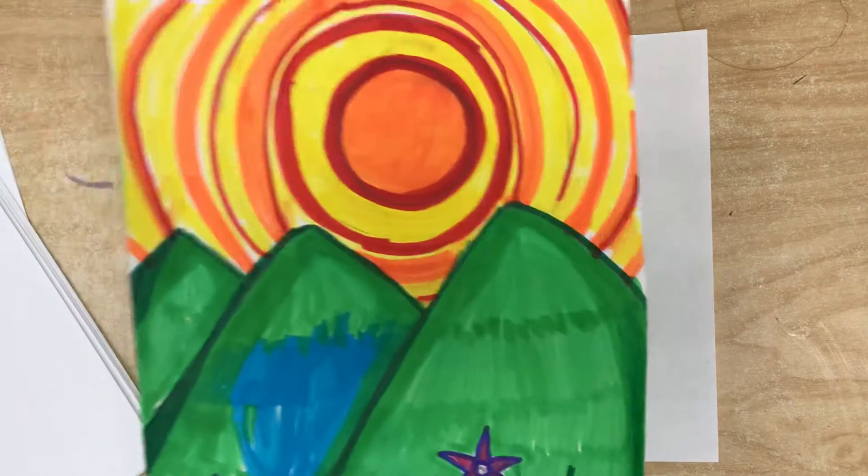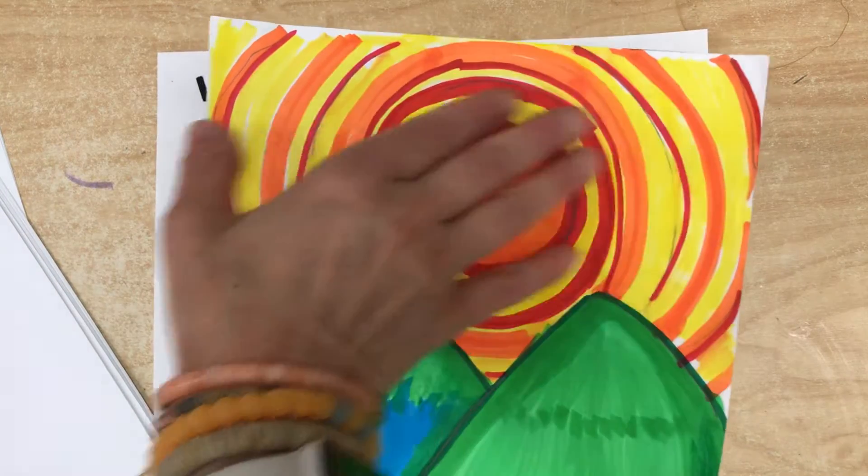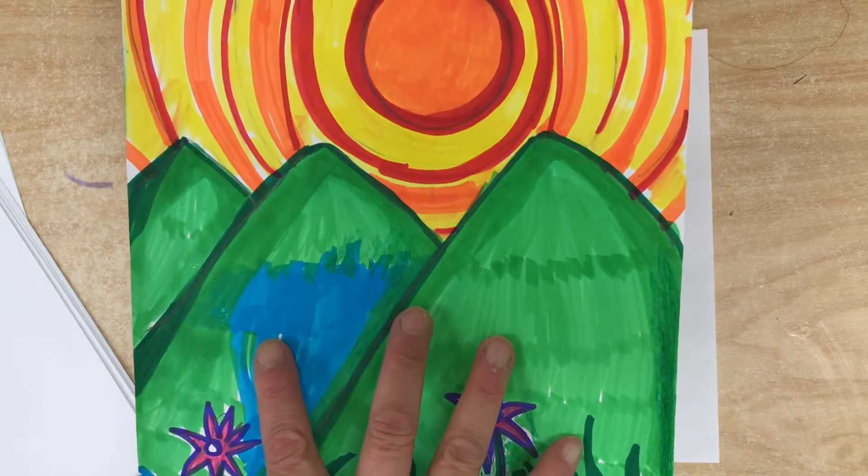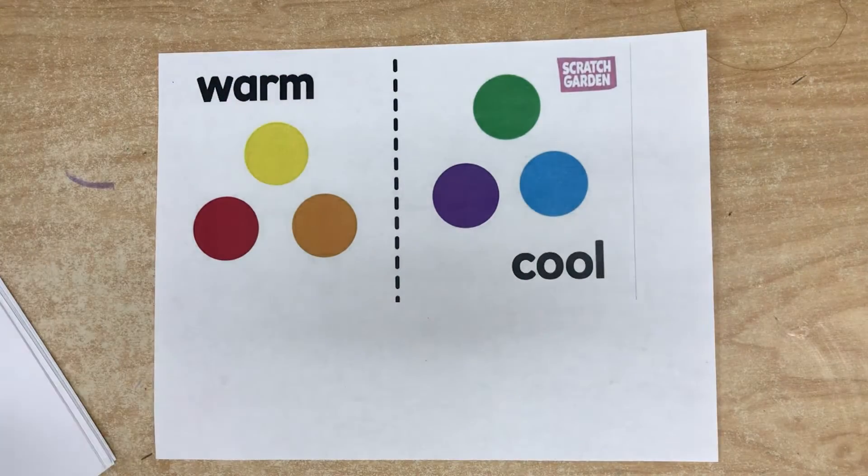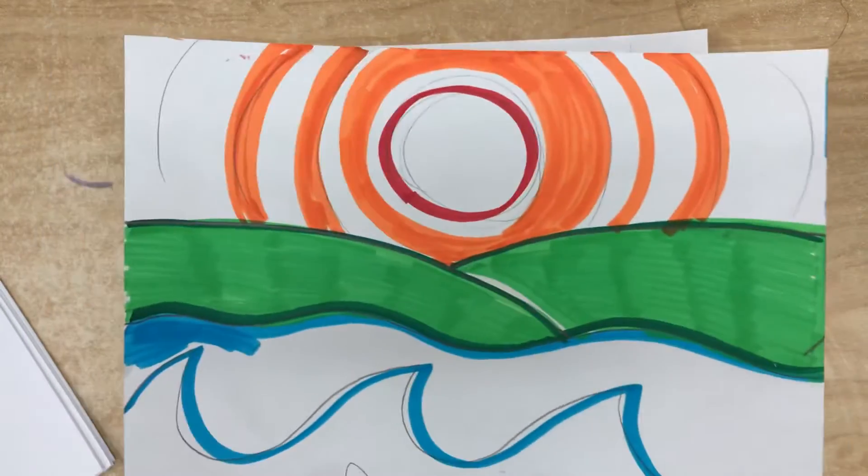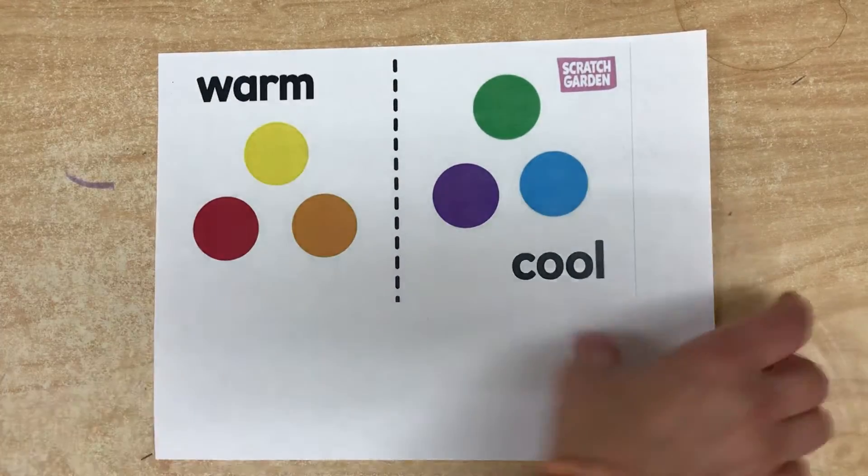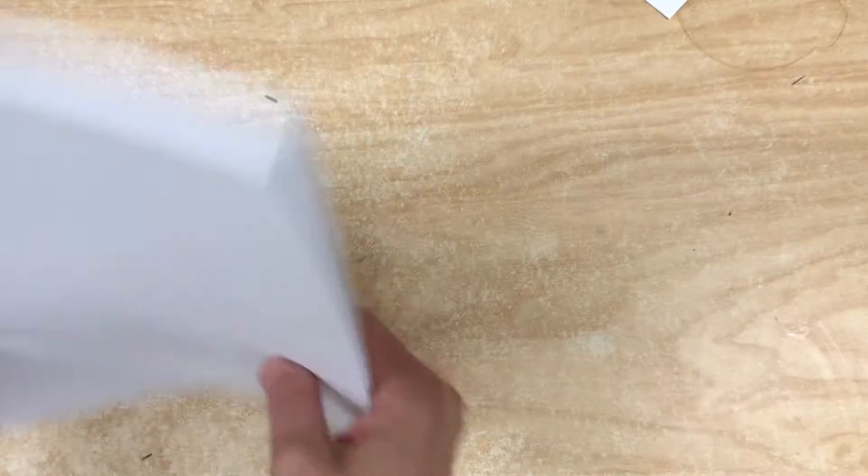I even did one with land, but the sky has to be warm colors and the bottom has to be cool colors under the horizon line. I didn't finish that one, so let me show you some easy ways to begin.